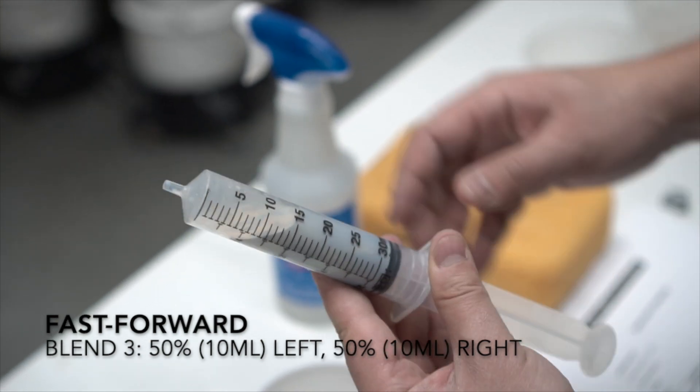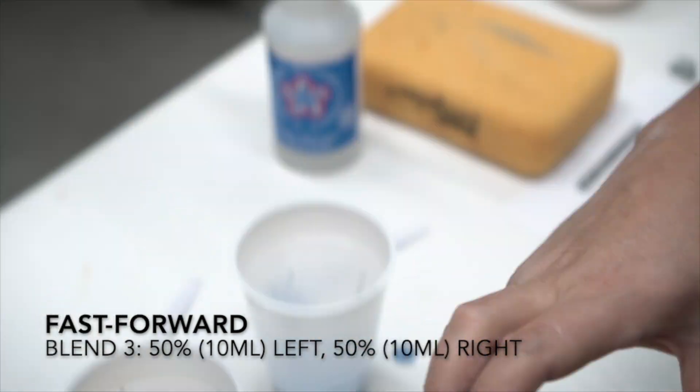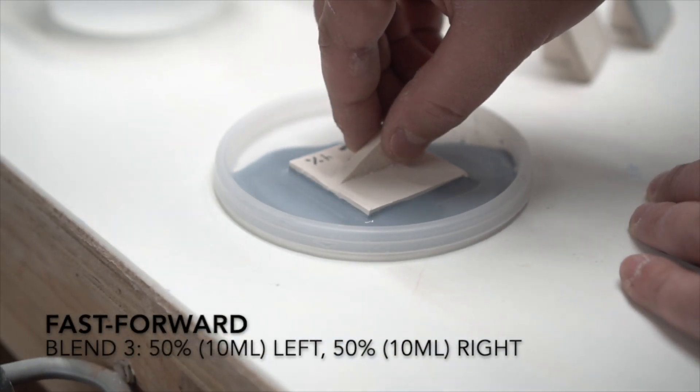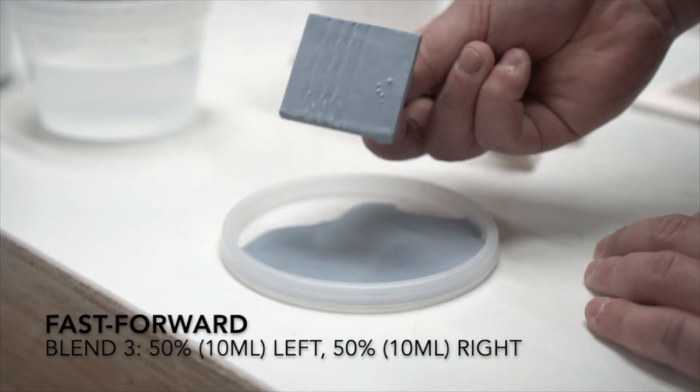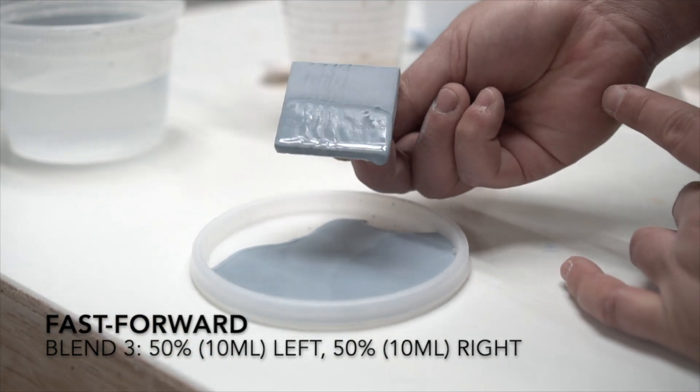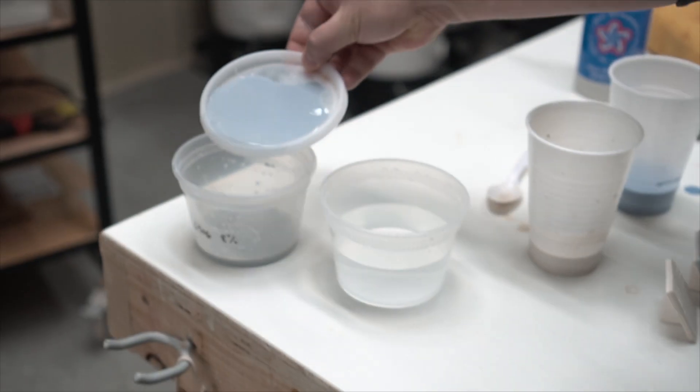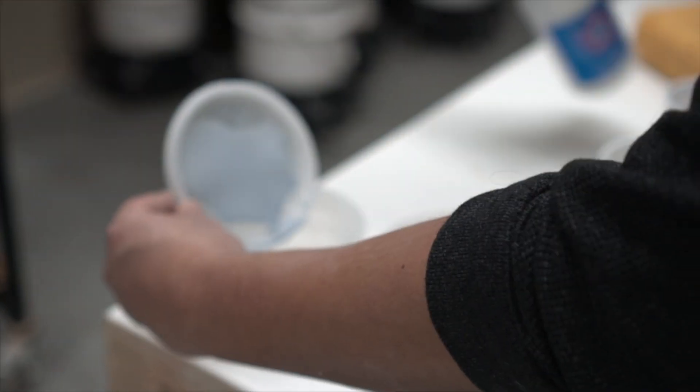Once again, I shake the mixture inside the syringe and then disperse it into the container lid. Grabbing the third test tile, I dip it twice, clean off the bottom, then clean off the lid and the syringe in preparation for the next test.